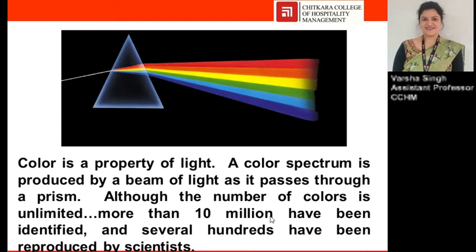What is color? It is a sensation which causes stimulation of the eye. When light hits an object, some of the wavelengths are absorbed and some are reflected, depending on the material of the object. The reflected wavelengths are what we perceive as the object's color.